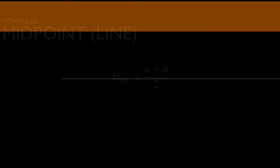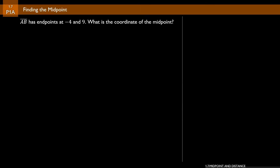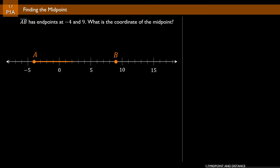The first question: finding the midpoint. Segment AB has endpoints at negative 4 and 9. What is the coordinate of the midpoint? We've drawn this on a number line, but we don't need that — we have enough information to use the formula. Make sure you choose the right formula: midpoint on a number line is a plus b over 2. Plugging in gives us negative 4 plus 9 over 2, which equals 5 over 2, or 2 and a half. Leave answers as fractions unless otherwise indicated.